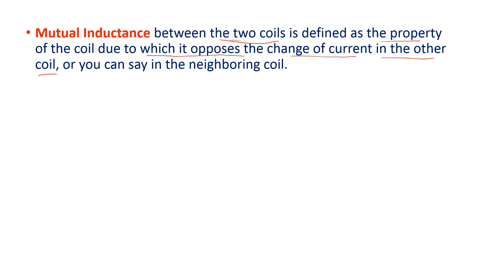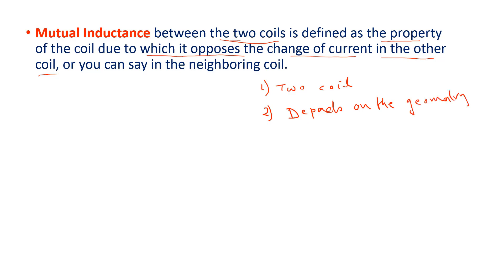So for mutual induction, we need two coils. It also depends on the geometry of the coil and on the orientation of the coils. We are going to describe now how it depends on the geometry and how it depends on the orientation.